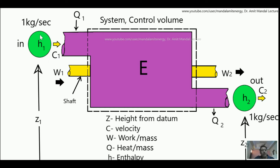The fluid is entering inside with enthalpy content H1. The work input to the system via the left-hand shaft is W1, and the amount of heat input per unit mass when this fluid is entering is Q1. Remember, W represents work done per unit mass and Q represents heat input per unit mass.